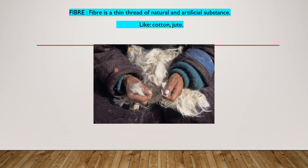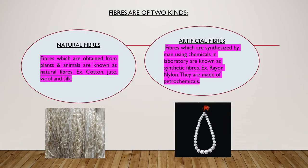First, we will discuss what is fiber. Fiber is a thin thread of natural and artificial substance like cotton and jute. Fibers are of two kinds: natural fibers and artificial fibers. Fibers which are obtained from plants and animals are known as natural fibers. Examples: cotton, jute, wool and silk.